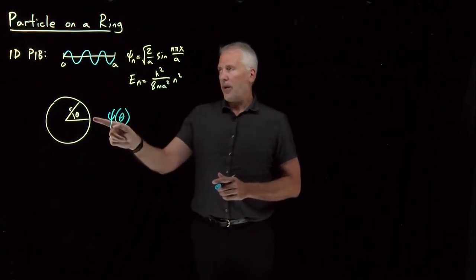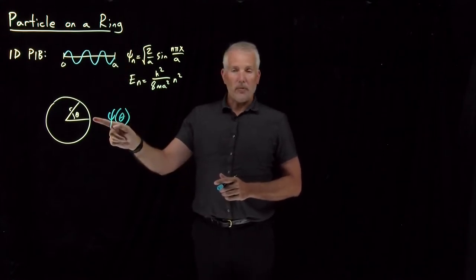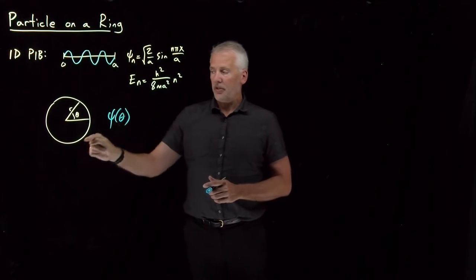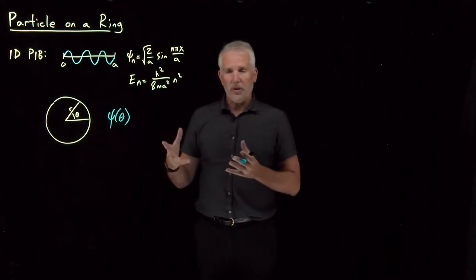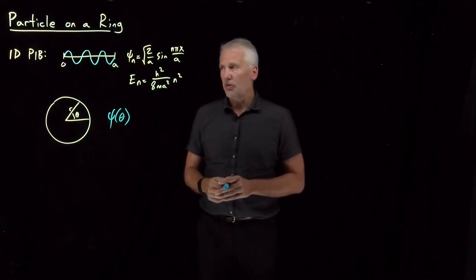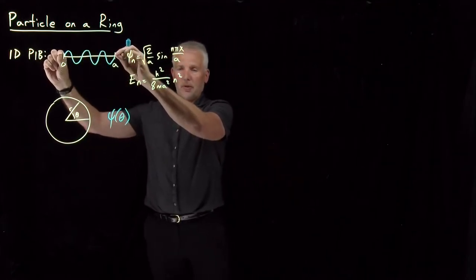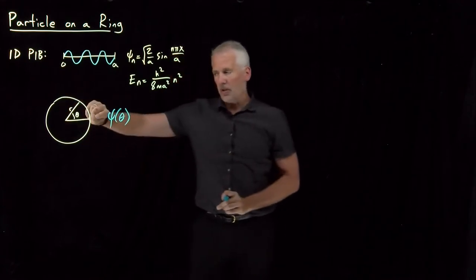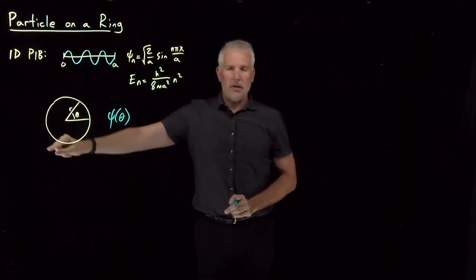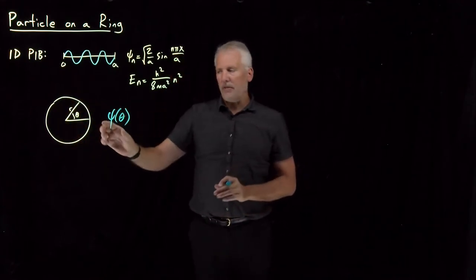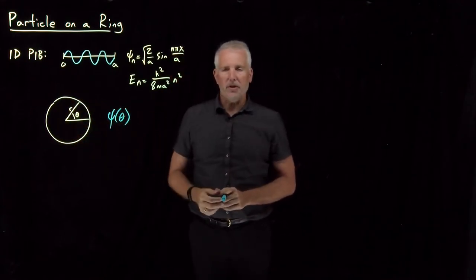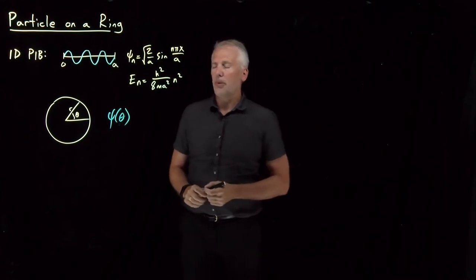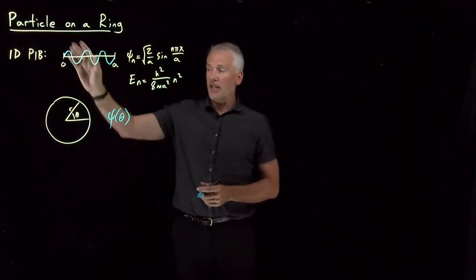We can see now why it's called particle-on-a-ring — the particle is confined to this ring. We could have called it particle-on-a-circle, or particle-on-a-rope if we've wrapped a string into a circle. There are a lot of different names you could give it. We'll call it particle-on-a-ring, though some people call it particle-in-a-ring.